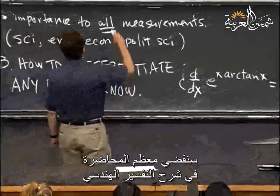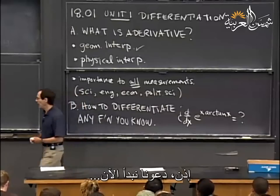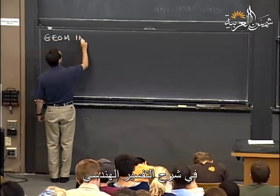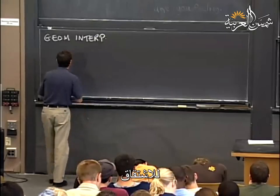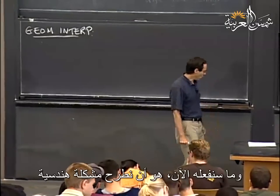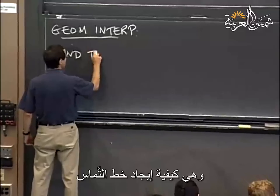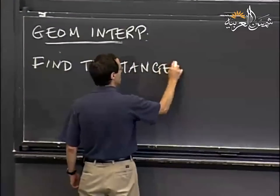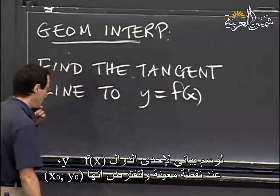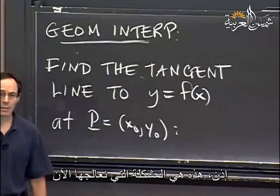Today we're going to spend most of our time on the geometric interpretation of derivatives. The geometric problem we're addressing is finding the tangent line to some graph of some function at some point, say (x₀, y₀).